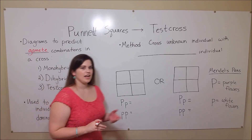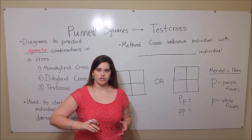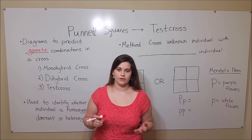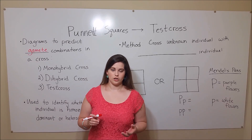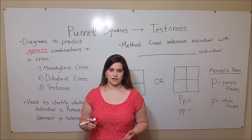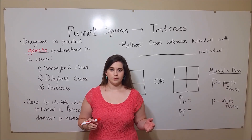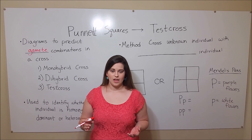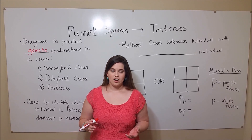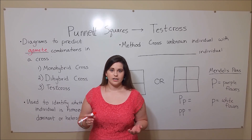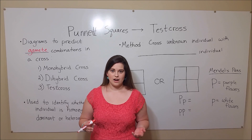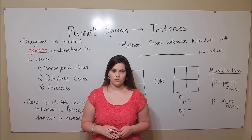Remember that gametes are just the cells that unite during fertilization. So in humans, this is a sperm cell and an egg cell, and they are carrying different combinations of alleles that each parent has to give away.